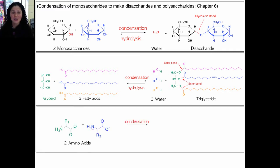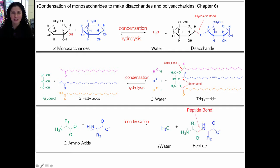Now we're going to take two amino acids. We're going to remove an oxygen from one of the units and two hydrogens from the second unit to make water and a new bond. This time the new bond is called a peptide bond and it's part of a new functional group called an amide functional group. Condensation of amino acids creates a new type of molecule called a polypeptide, but it's often referred to simply as a peptide.